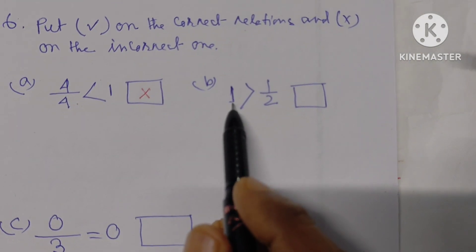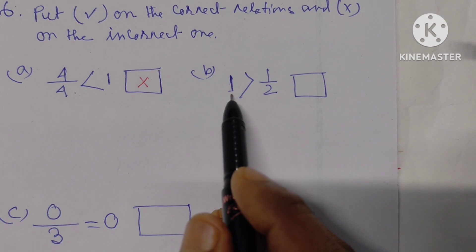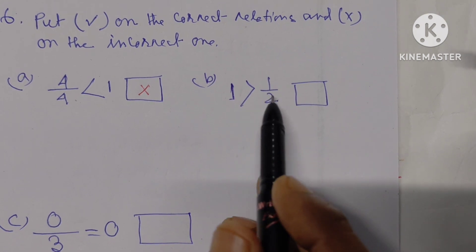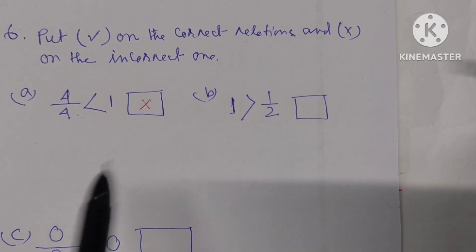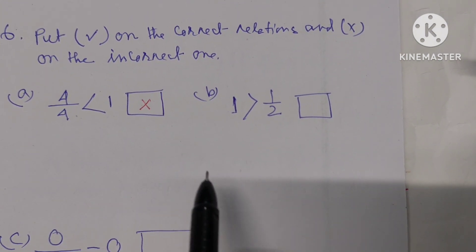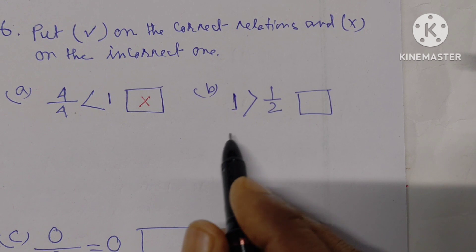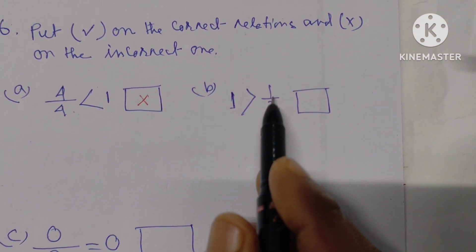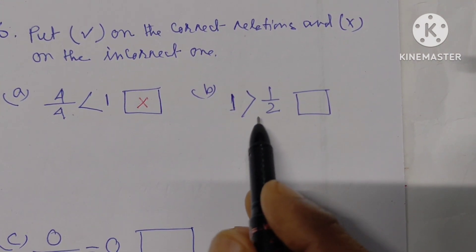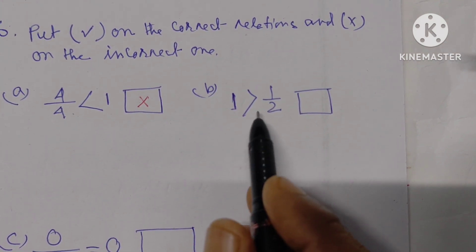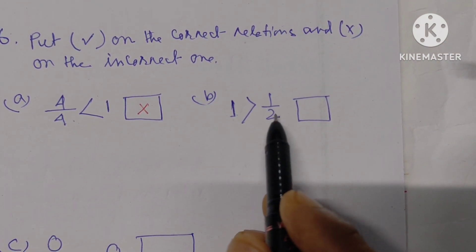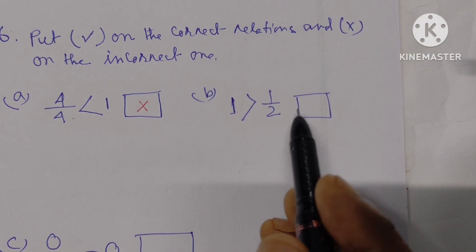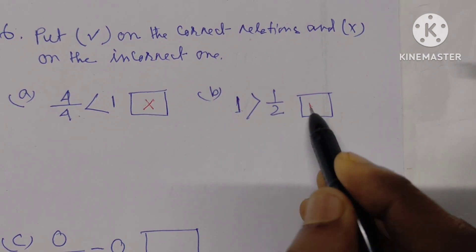B: Given — 1 is greater than 1 by 2. Yes, 1 means whole. One half is half of anything. So 1 is greater than 1 by 2. It is right — it gets a tick.